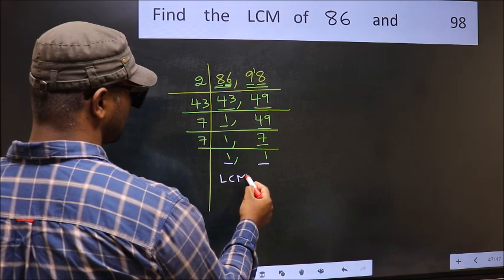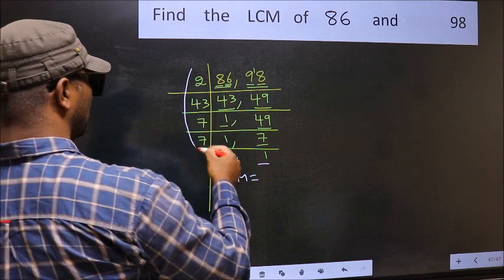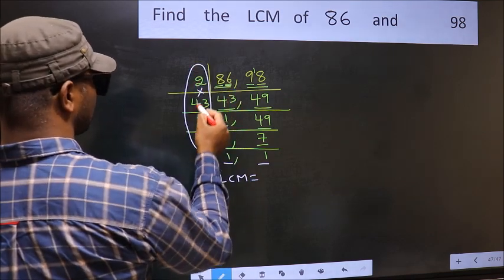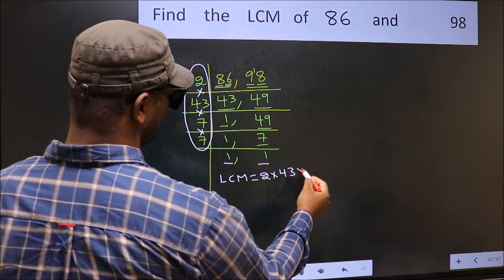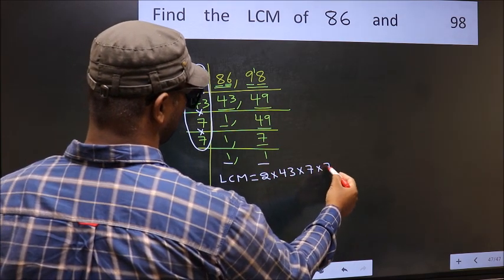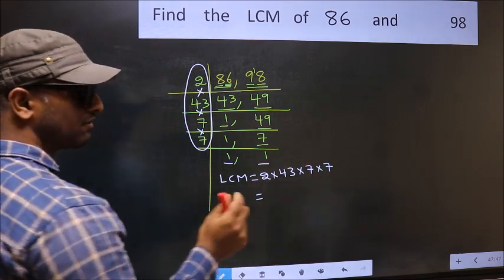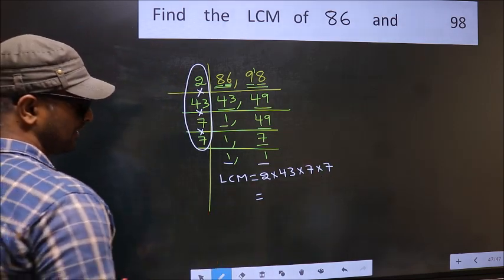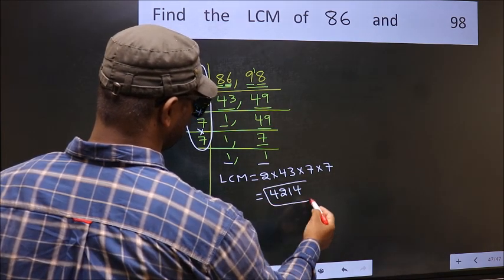So our LCM is, LCM is the product of these numbers. That is 2 into 43 into 7 into 7. When we multiply these numbers, we get 4214 is our LCM.